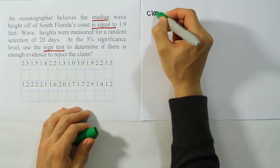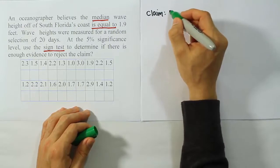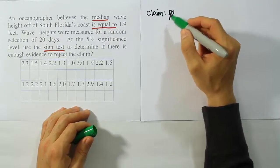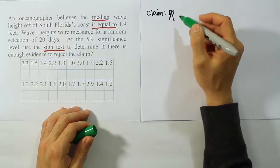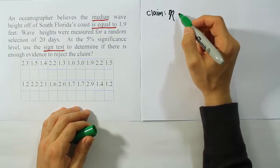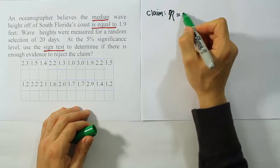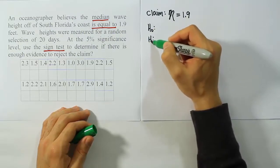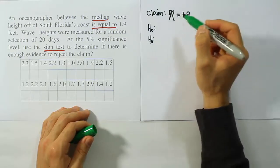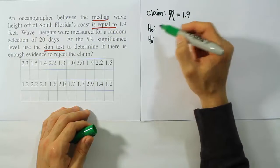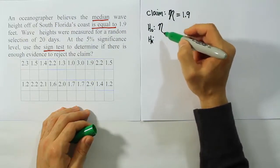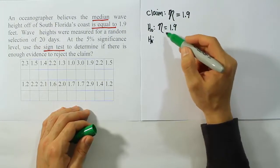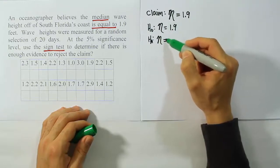Let's get the claim then. The claim is going to be eta, which is this symbol here. Eta is the Greek symbol for the letter eta, and it represents our population median. Here we're saying the population median is equal to 1.9. So let's do H0 and HA. H0 and HA follow the same rules as before. If we have an equal sign on the claim, it makes the claim and H0 the same. So we'll use eta is 1.9 under H0. And HA, which expresses the opposite idea, must be not equal to 1.9.